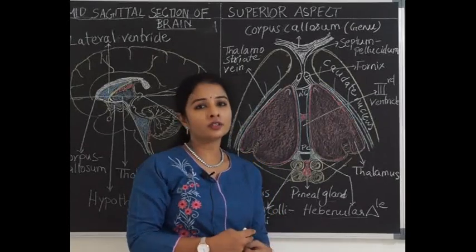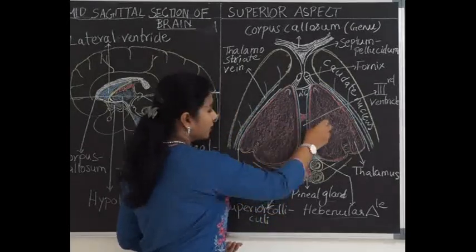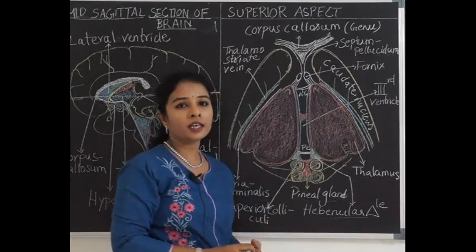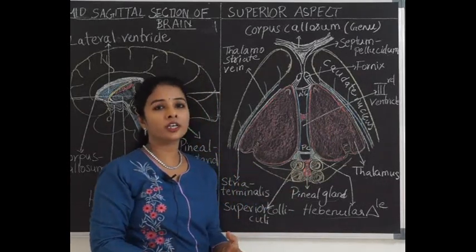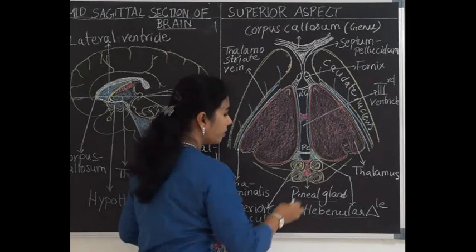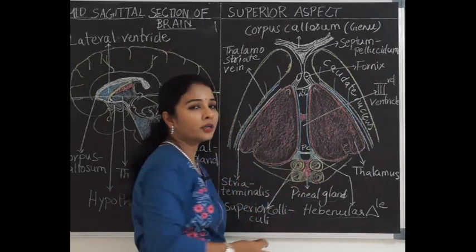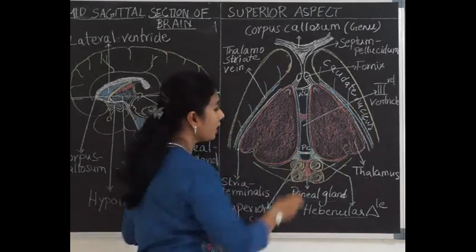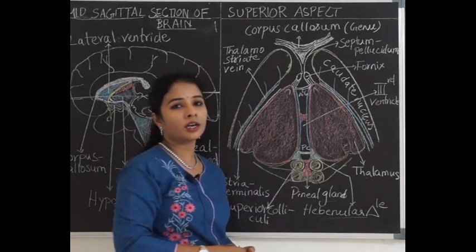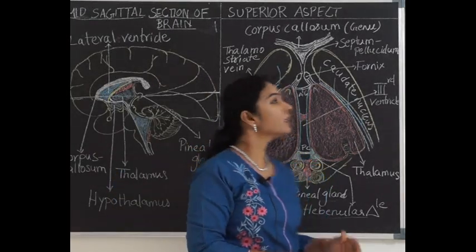So pars dorsalis consists of thalamus; metathalamus is formed by medial and lateral geniculate bodies; and epithalamus is formed by the pineal gland, habenular triangle, habenular nuclei, posterior commissure and habenular commissure. Now let's see about the thalamus.